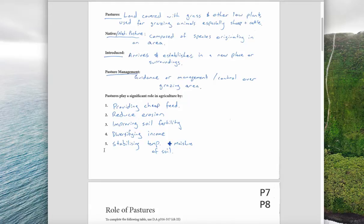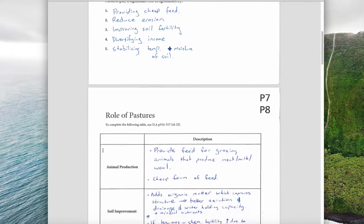The last one, number five, it helps stabilize soil temperature and moisture. If you've got anything covering the soil, even a mulch or pasture, it will help stabilize the soil temperature.